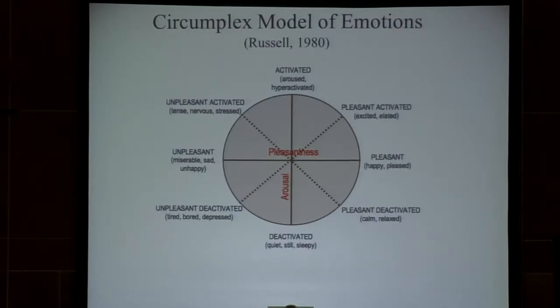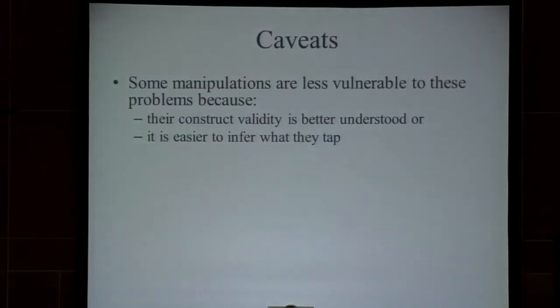Now, some caveats briefly. Some manipulations in our field are less vulnerable to these problems because their construct validity is very well understood, or because it's easier to figure out what they actually measure. I asked a bunch of experts — close colleagues — what they thought were the best-validated manipulations in social psychology, and here's the list I got from about four or five experts. I'm not harping on these tried-and-true manipulations that are very well studied. I'm focusing more on the problem of conjuring up a manipulation and trying it five different ways and then assuming we're measuring the same thing, without a really clear handle on what these various manipulations are getting at for different kinds of people.